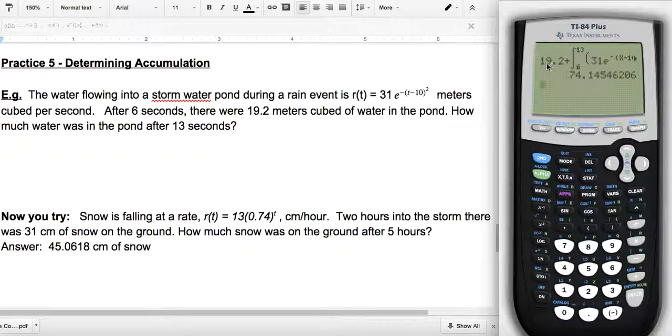Okay, folks. So 19.2 at six seconds, and then I have to add the area under the curve to that between six and 13. And since I'm going to the right, it's positive from six to 13. Okay, and that would be my answer.